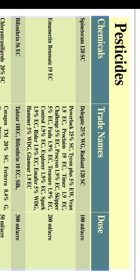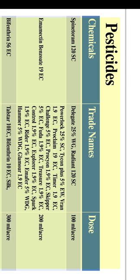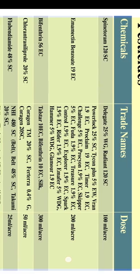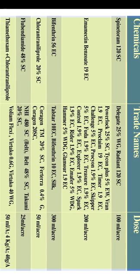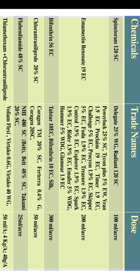Pesticide chemical trade names and doses per acre — Spinetoram 120 SC (Delegate 25% WG, Radiant 120 SC): 100 ml/acre. Emamectin benzoate 19 EC (Power 25% SC, Ticken Plus 5% EW, Van 1.90 EC, Procane 19 EC, Timer 1.90 EC, Challenge 5% EC, Proteon 1.9% EC, Skipper 5% EC, Footer 1.9% EC, Treasure 1.9% EC, Control 1.9% EC, Explorer 1.9% EC, Spark 1.9% EC, Rider 1.9% EC). Emamectin benzoate 5% (Amapha 5% WDG, Hammer 5% WDG, Glamour 1.9 EC): 200 ml/acre.